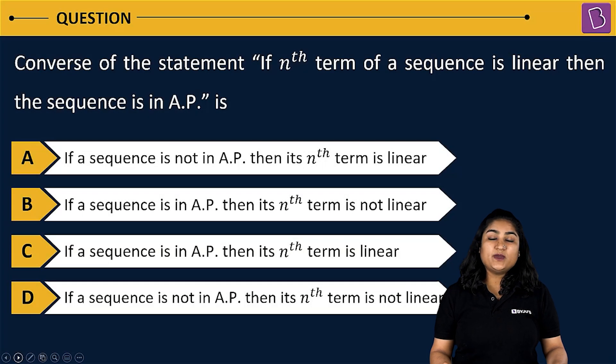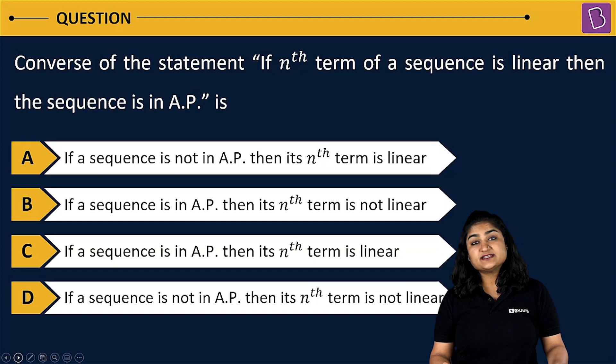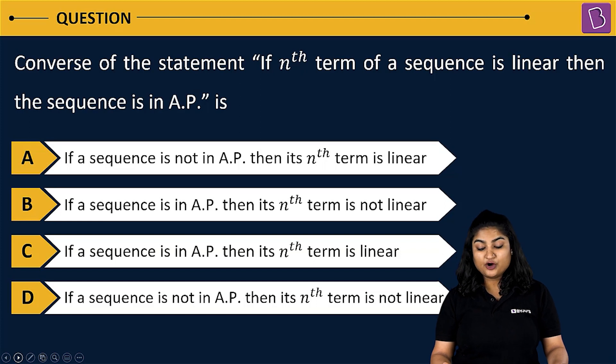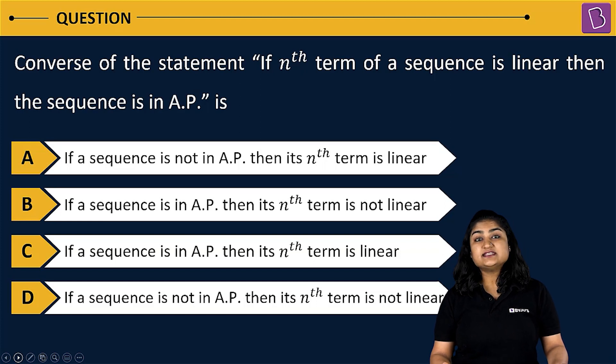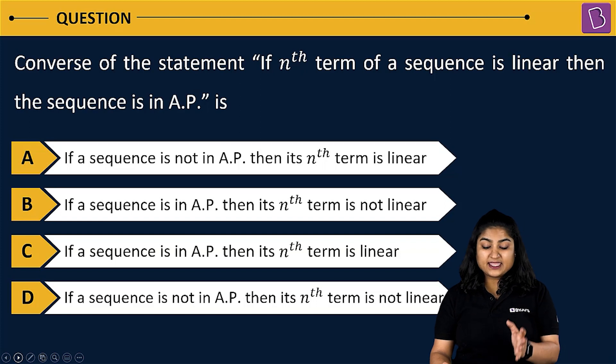In this question, we have to find out the converse of the statement: if the nth term of a sequence is linear, then the sequence is an AP.